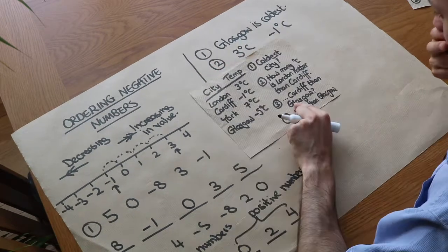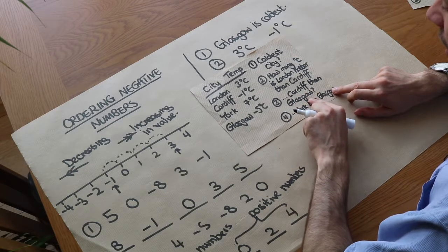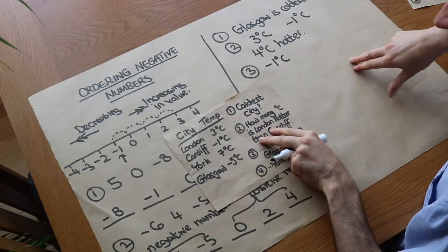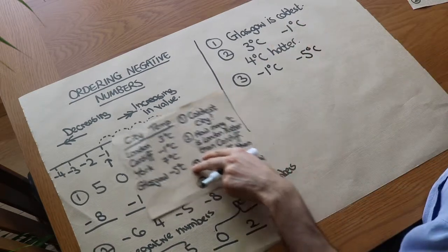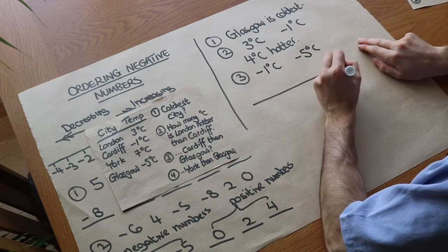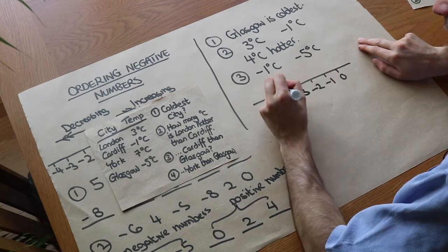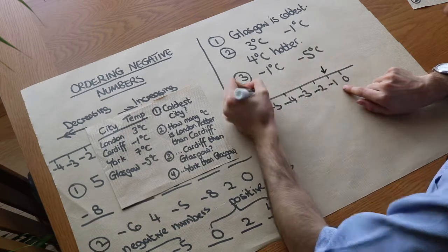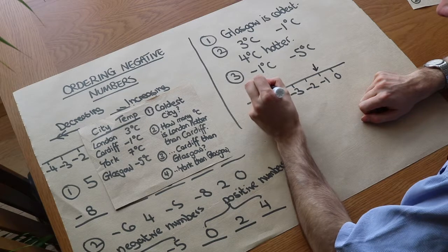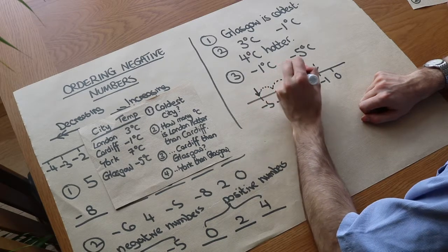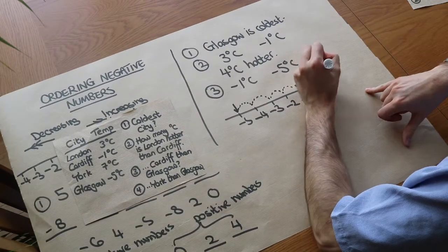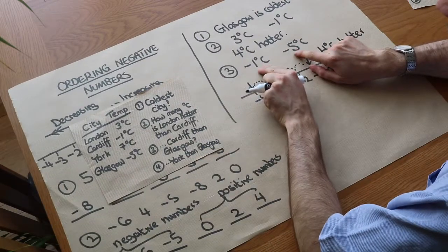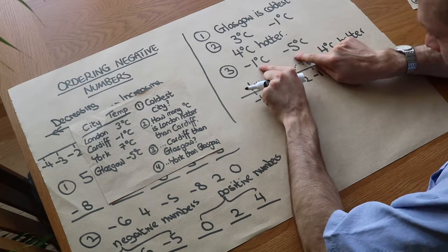How many degrees Celsius is Cardiff hotter than Glasgow? Cardiff is minus one Celsius and Glasgow is minus five Celsius. Visualizing on the number line: zero, minus one, minus two, minus three, minus four, minus five. Looking at the difference between minus one and minus five: one, two, three, four — so Cardiff is four degrees hotter than Glasgow. When both numbers are negative, the difference is just the difference between the numbers after the minus sign: five minus one equals four.